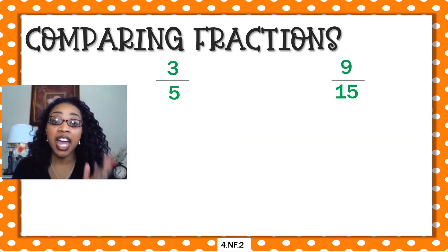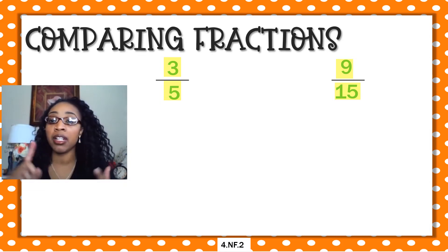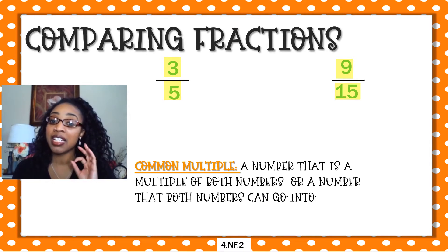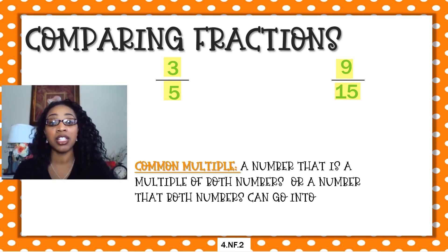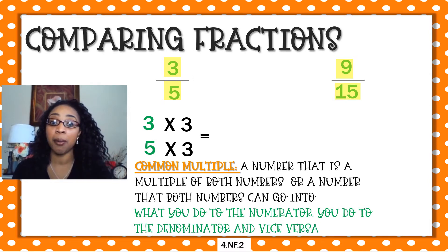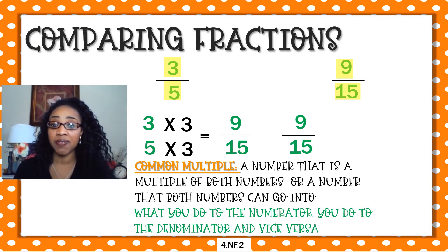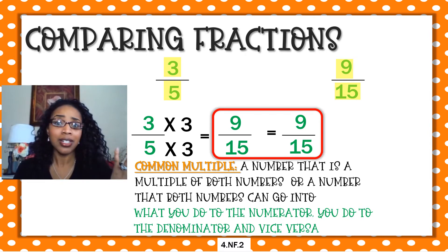Let's do this one more time. Here we have three fifths and nine fifteenths. I look at my denominators — are they the same? Nope. I look at my numerators — are they the same? Nope. Am I dealing with benchmark fractions? Nope. So I don't have the same numerator, denominator, or benchmark fractions. I have to figure out what is my common multiple — a number that is a multiple of both numbers. I know that three can go into nine, and five can go into fifteen, so I can do either one. Let's do three fifths and multiply both my numerator and my denominator by three. Three times three is nine, and five times three is fifteen. Now I'm ready to compare, because I found an equivalent fraction. I now have nine fifteenths and nine fifteenths — I know that those are equal. So these two fractions are equal. Nine fifteenths is equal to nine fifteenths.